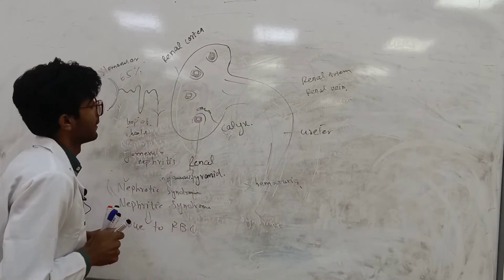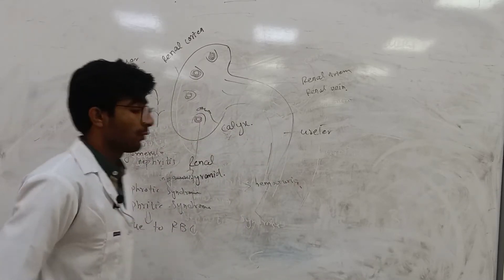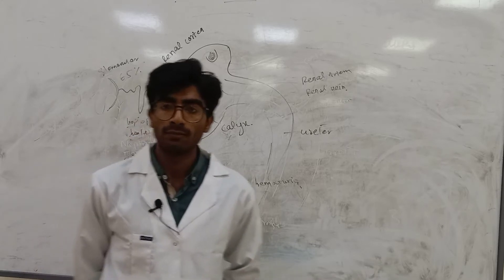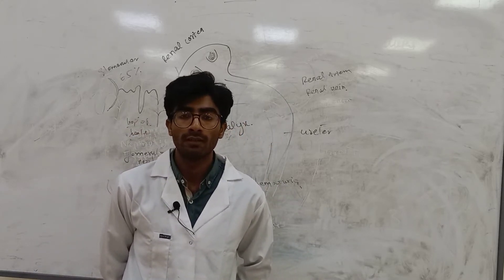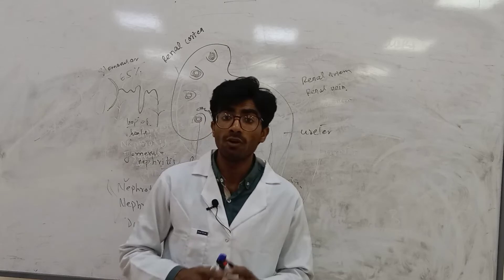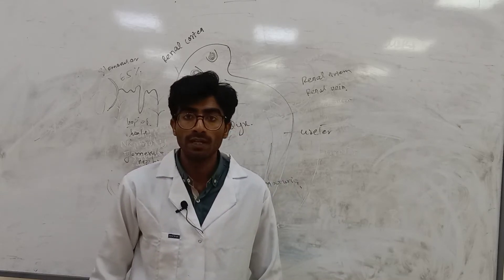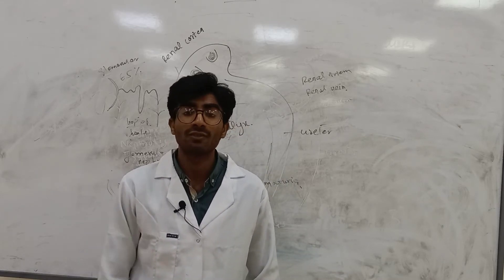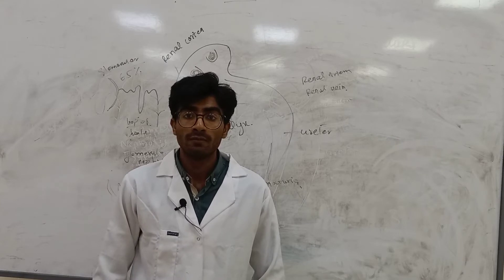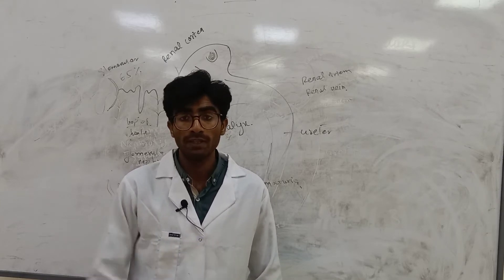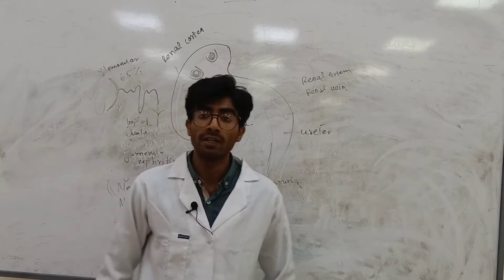But guys, there are two types of kidney diseases. One is acute, other is chronic. The disease which is short time is known as acute. The disease which is long time, which is long period. This is called chronic.